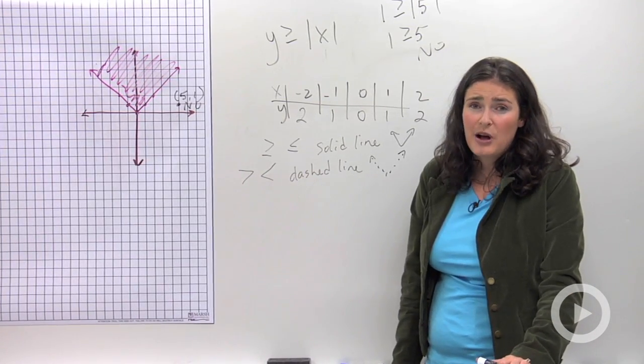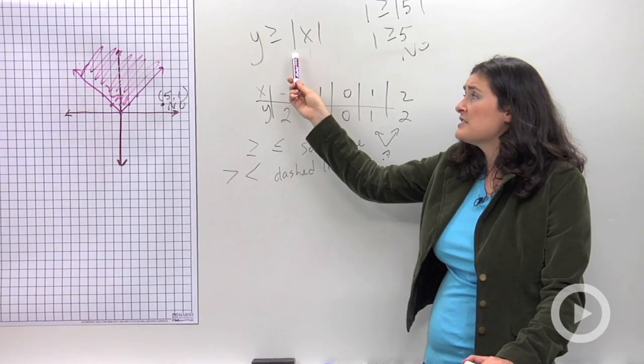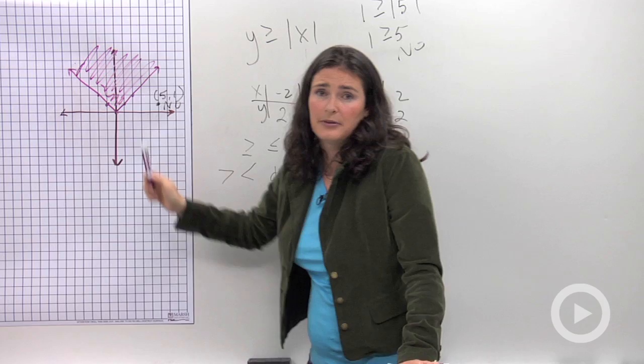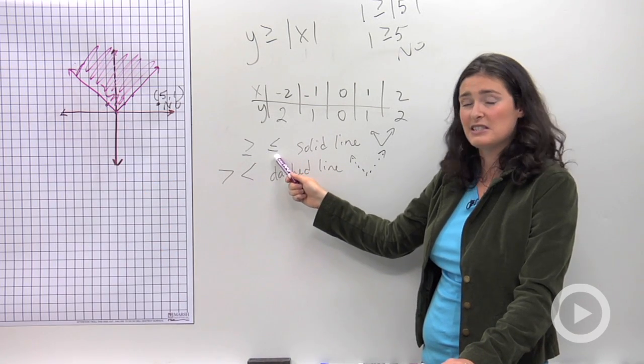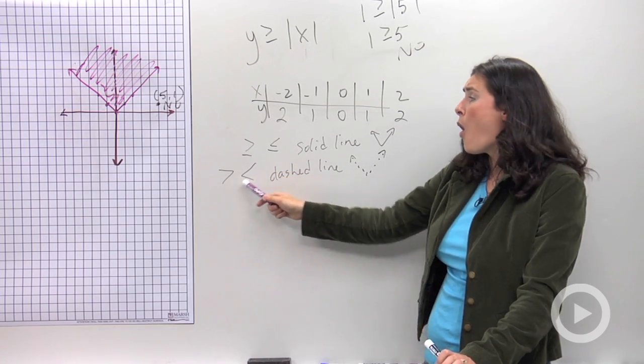So when you're working on these problems, there's a couple things to keep in mind I just want to summarize for you. The first thing is that all absolute value graphs have this v shape. The next thing is that all inequalities are either going to be solid, if they're greater than or equal to or less than or equal to, or it might be dashed.